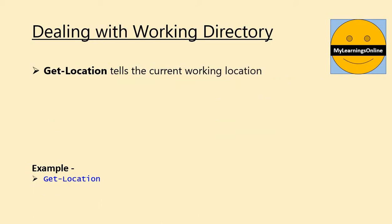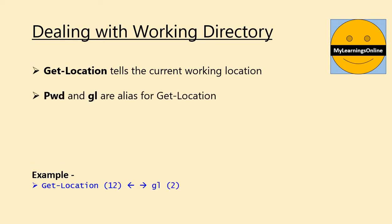Get-Location tells the current working location or current working directory that we are presently working with. In this example, we are trying to get the current working directory. As we are already aware, aliases are very helpful in reducing time to write code and code length itself. Pwd and gl are aliases for this command. In the example, we can easily see the benefit of using aliases.